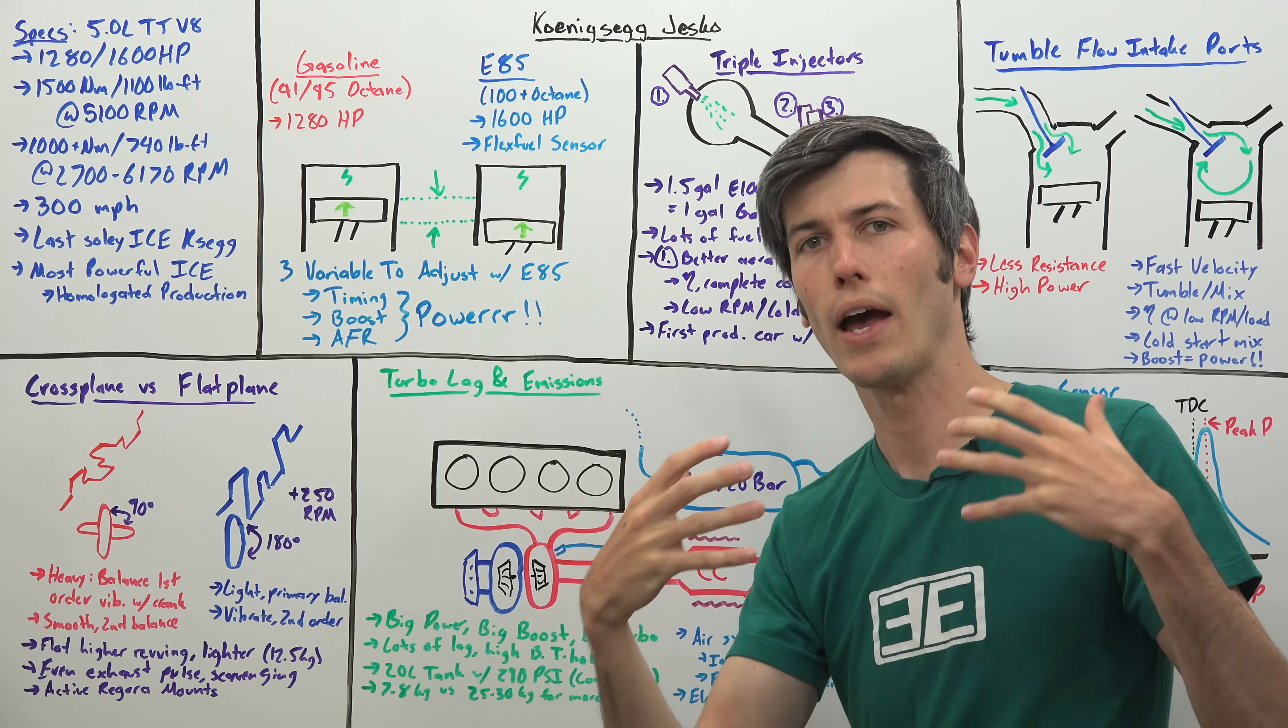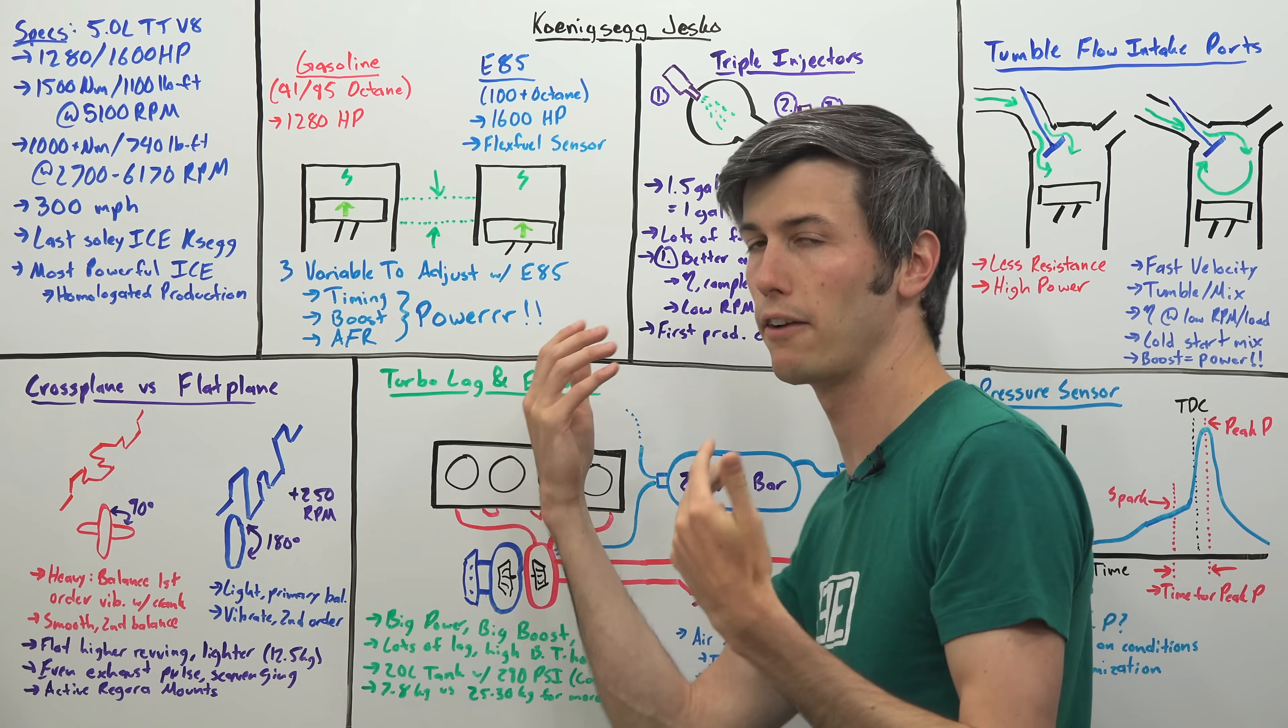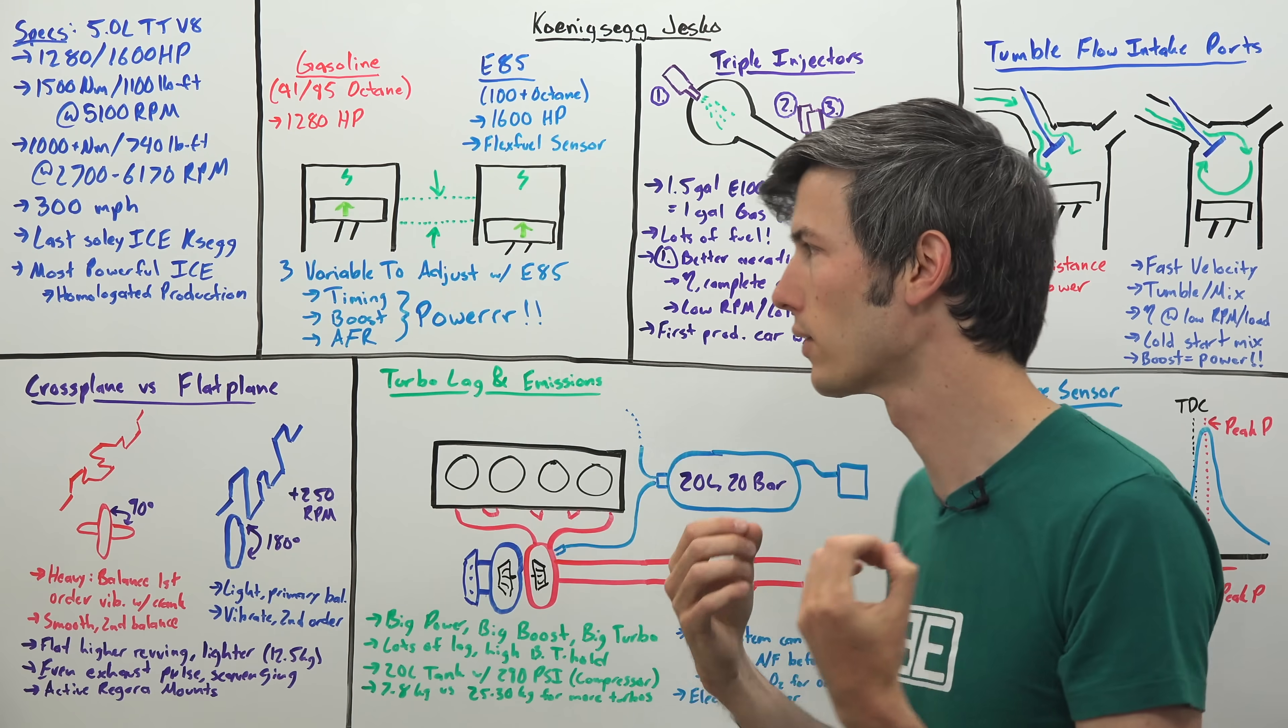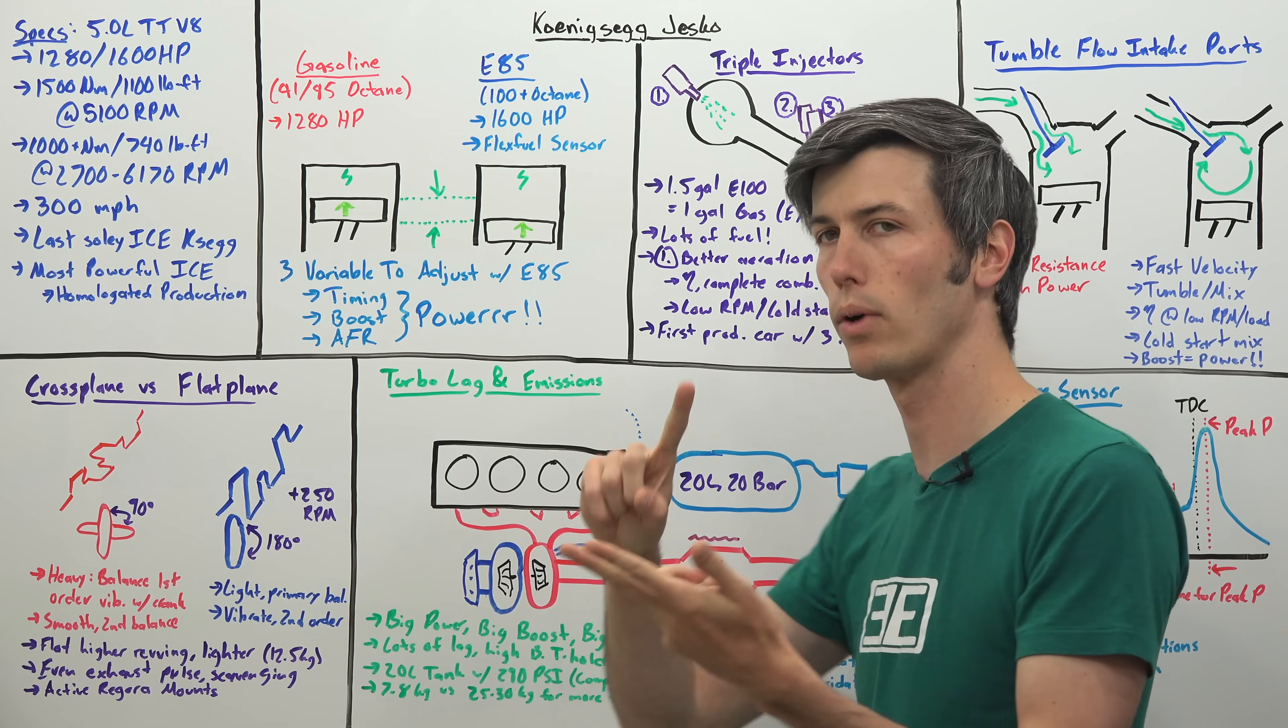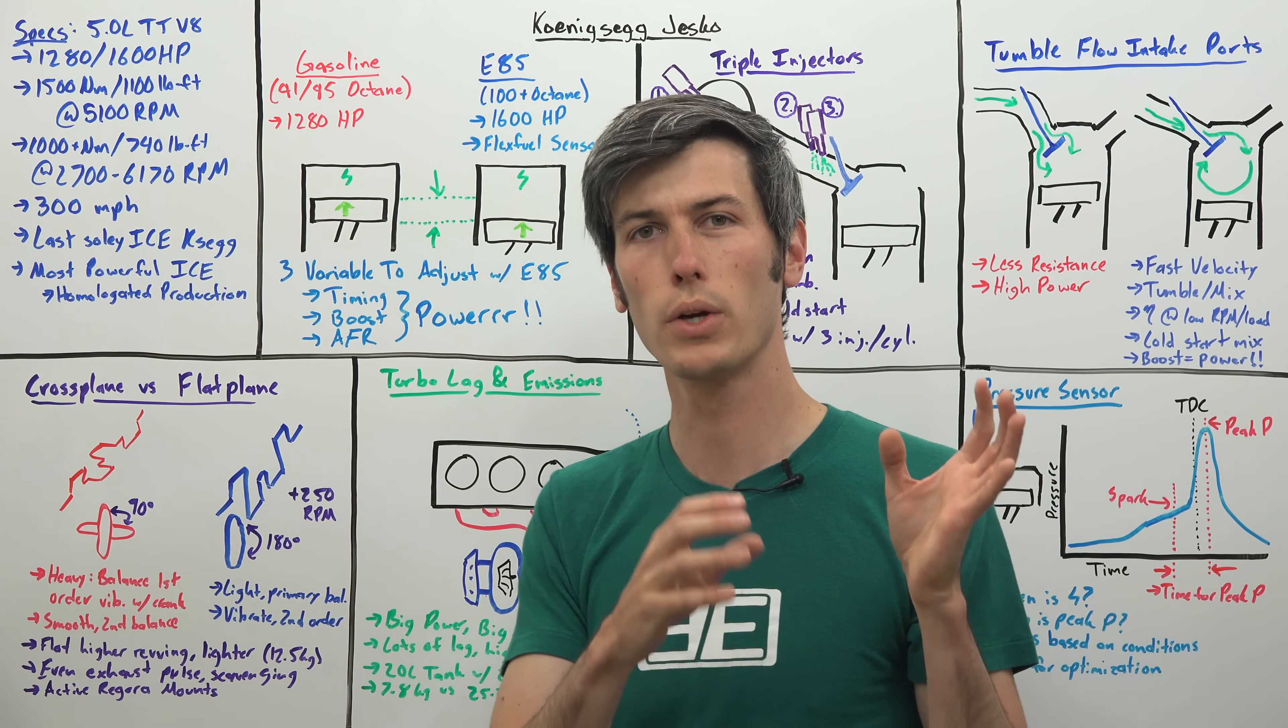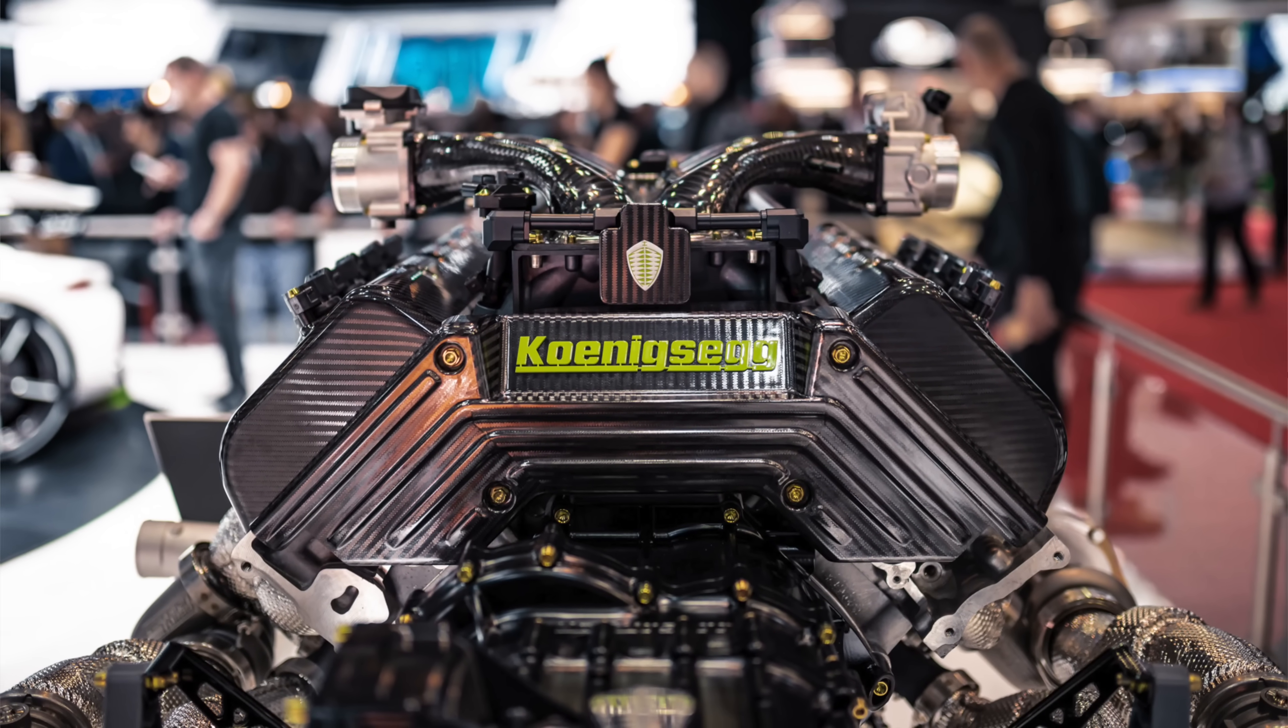By using ethanol you have the benefit of that higher octane rating, and that gives you three variables that you can play around with to help make more power. First of all, timing. You can advance the timing, meaning you fire that spark plug sooner without worrying about knock or damaging the engine. It also means you can run more boost, and you also have more flexibility with your air fuel ratio. By having a higher octane rating, you can choose that perfect air fuel ratio and create the maximum amount of power possible.